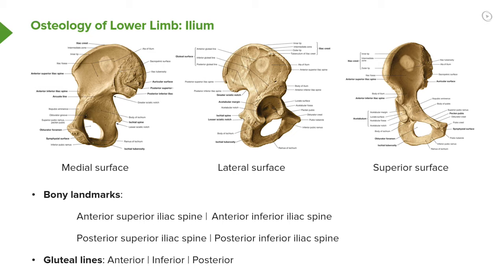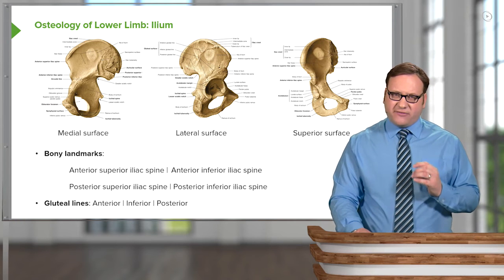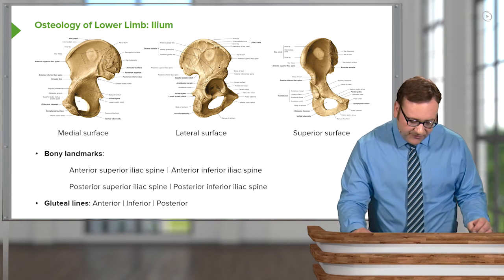Looking at the bony landmarks of the ileum, most anteriorly — visible here on the medial surface — we have the anterior superior iliac spine. The iliac crest comes around the top and finishes here as the anterior superior iliac spine. Inferior to that, we have the anterior inferior iliac spine. These bony landmarks are important because they offer attachment sites for muscles.